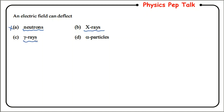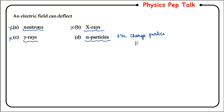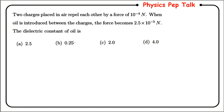X-rays and gamma rays are electromagnetic waves — they are photon particles of different wavelengths. Photons have no charge, so these two also do not deflect in an electric field. The alpha particle, however, is a positively charged particle, carrying a charge of +2e. Therefore it will deflect in an electric field, and option D is the correct answer.